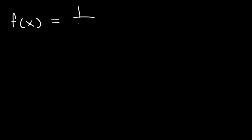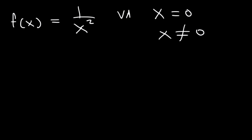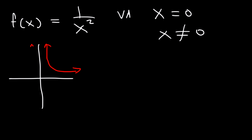Now let's talk about how to identify points of discontinuity in a graph. Here's the first example: 1 over x squared. If you're given a rational function, you can find the vertical asymptote — which is an infinite discontinuity — by setting the denominator equal to zero. In this case, the vertical asymptote is x equals zero, so that's a point of discontinuity. The function is undefined at that point, and we have an infinite discontinuity.